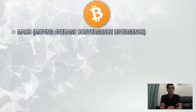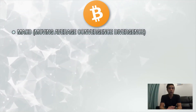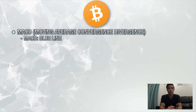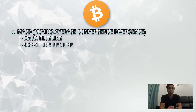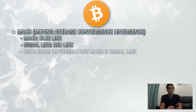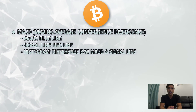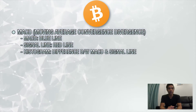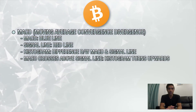The MACD is comprised of three different components. The first is the MACD itself, which is usually represented by the blue line. The second component is the signal line, represented in red. Lastly, we have the histogram, which plots the gap difference between the MACD and the signal line. Think of it as a sort of indicator of an indicator.